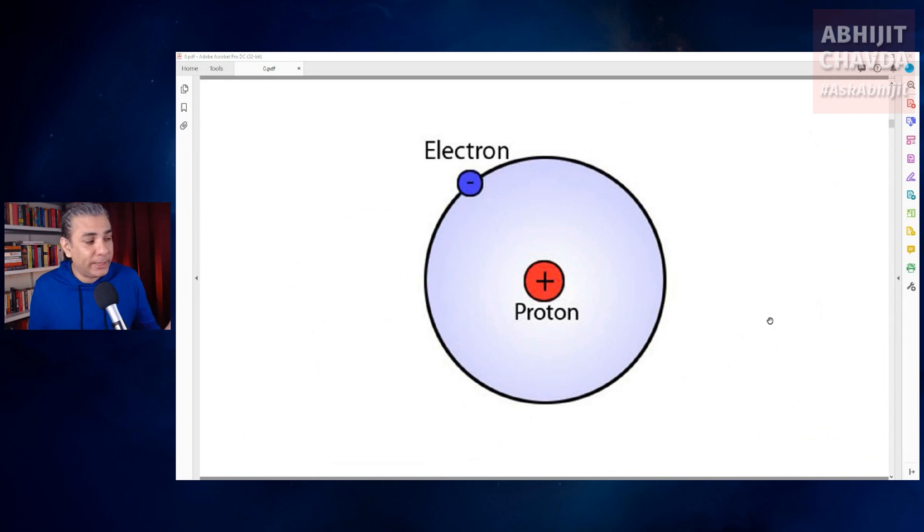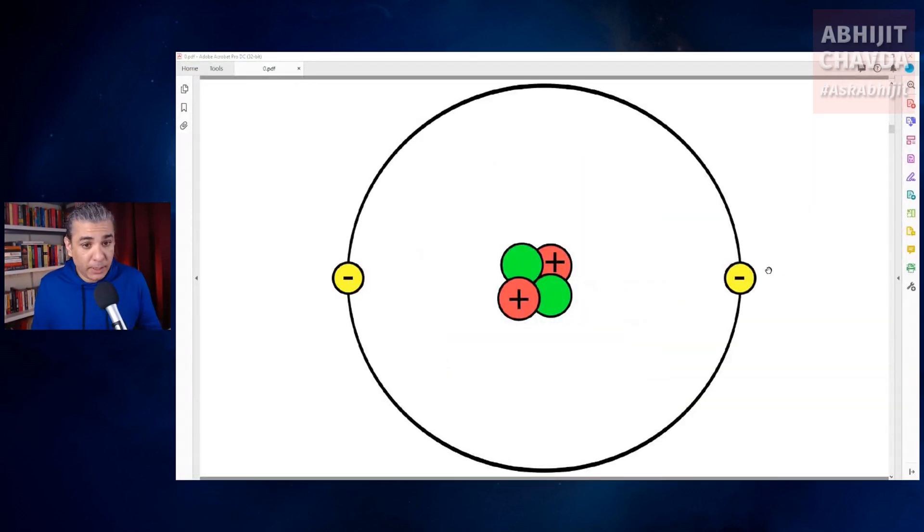Hydrogen is the simplest atom. Its nucleus consists of only one proton, and a single electron orbits this nucleus. The helium atom has a nucleus made up of two protons and two neutrons, and two electrons orbit the nucleus.